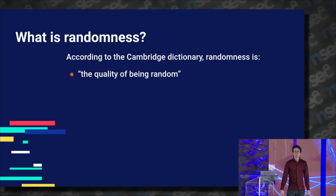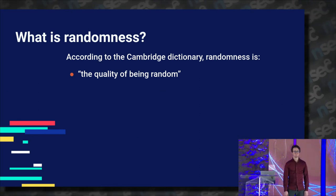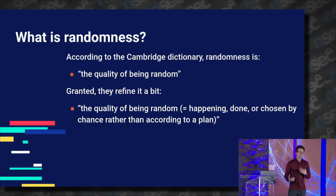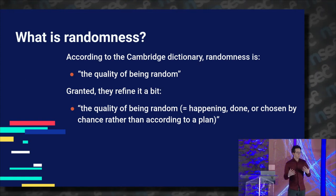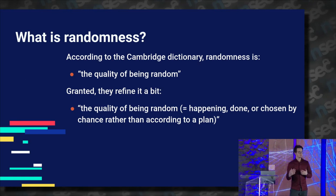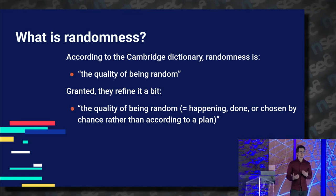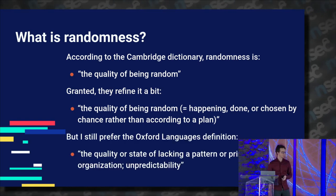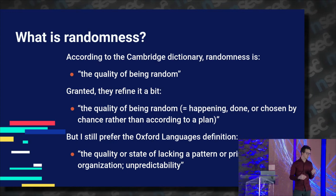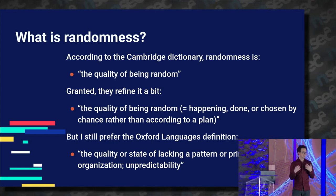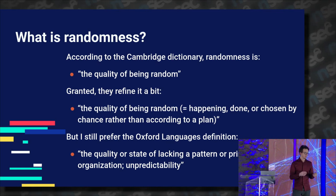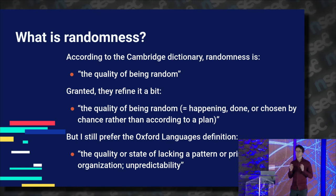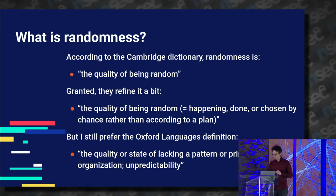So what is randomness? If you look it up in the dictionary, that's the quality of being random. They refine it a bit, saying it's the quality of happening, done, or chosen by chance rather than according to a plan. That's not exactly how we see randomness in computer science. Another dictionary has a better definition: randomness is the quality or state of lacking a pattern. And here there is a very important word — unpredictability — and we'll see why it's very important later on.